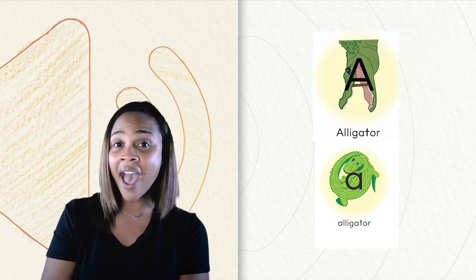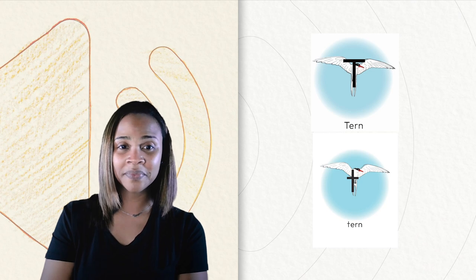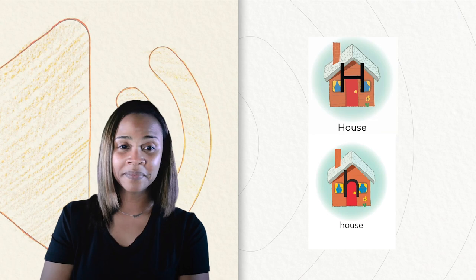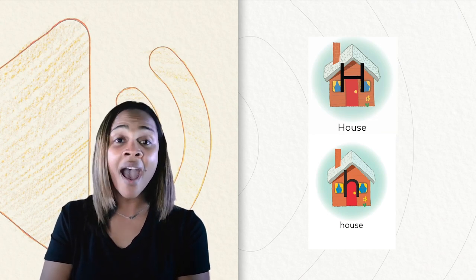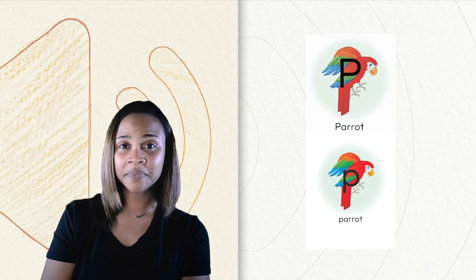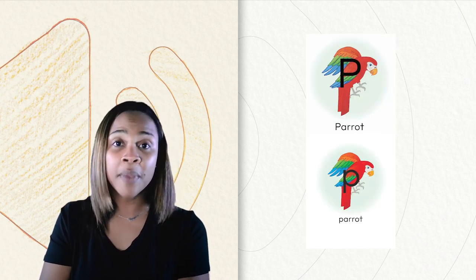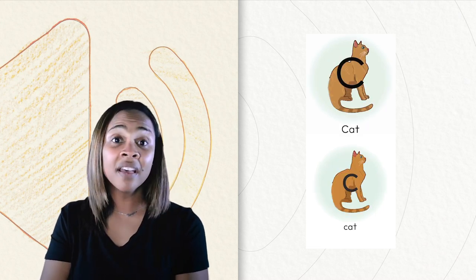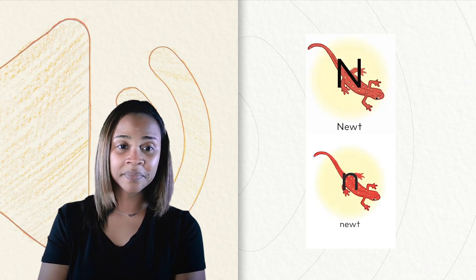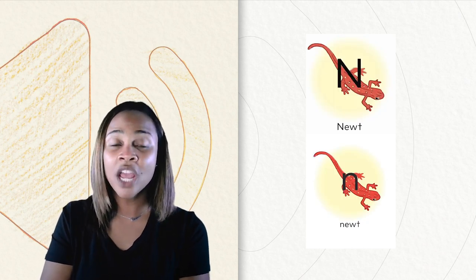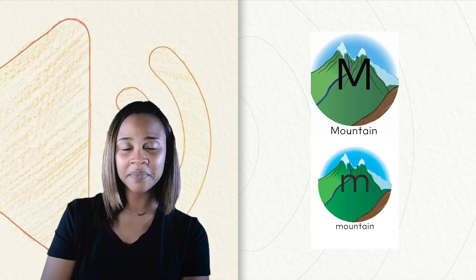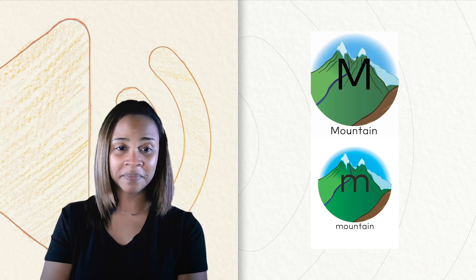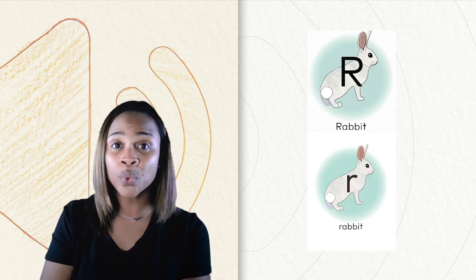A, A, alligator. T, T, turn. H, H, house. P, P, parrot. C, C, cat. N, N, newt. M, N, mountain. R, R, rabbit.